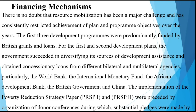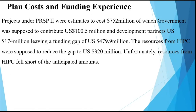Implementation of PRSP-1 and PRSP-2 were preceded by donor conferences during which substantial pledges were made by development partners. However, sometimes these pledges might not be fully met, and the plan funding experience has not been too palatable. Projects under PRSP-2 were estimated to cost $752 million, of which government was to contribute about $100 million and development partners about $174 million, leaving a funding gap of $179 million. Resources from HIPC were supposed to reduce a gap of $220 million, but HIPC resources fell short of their anticipated amounts.